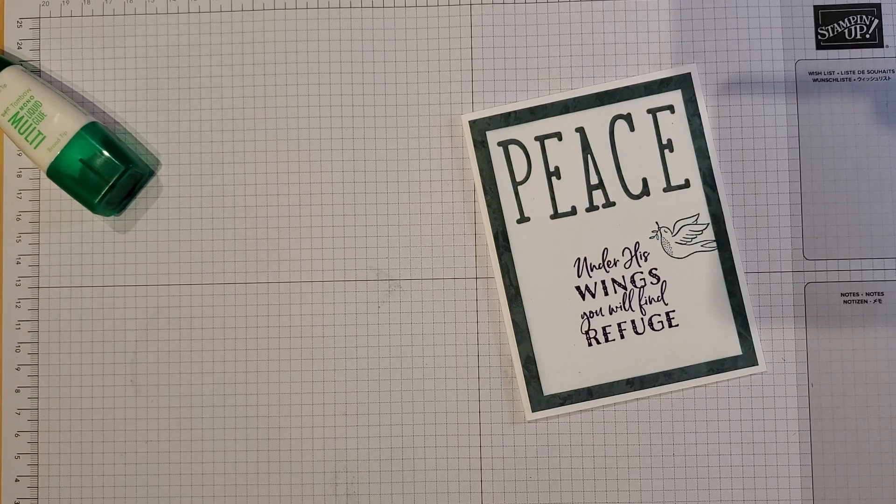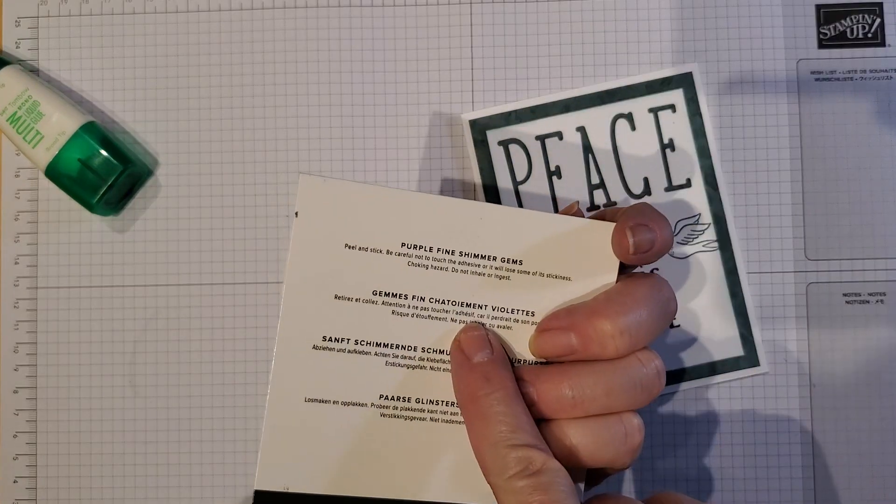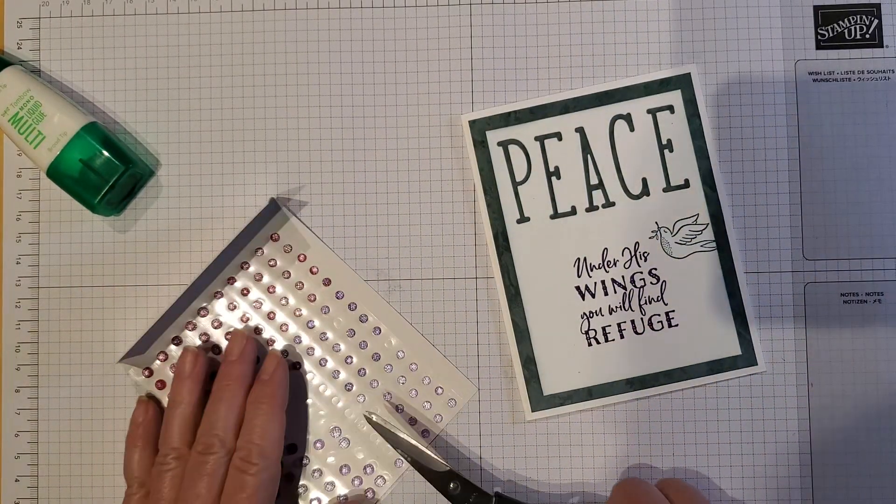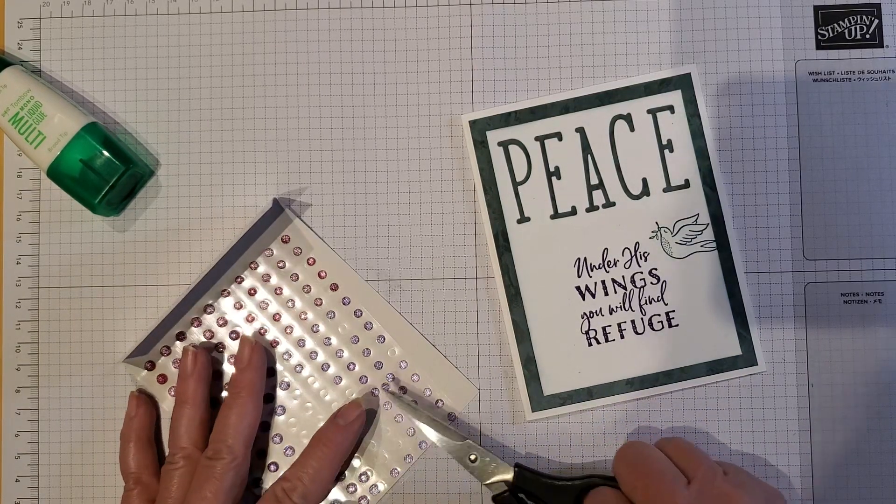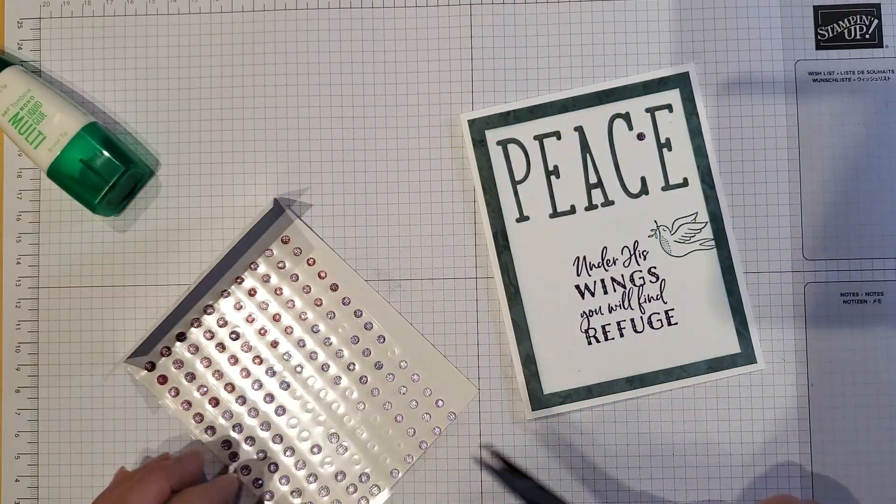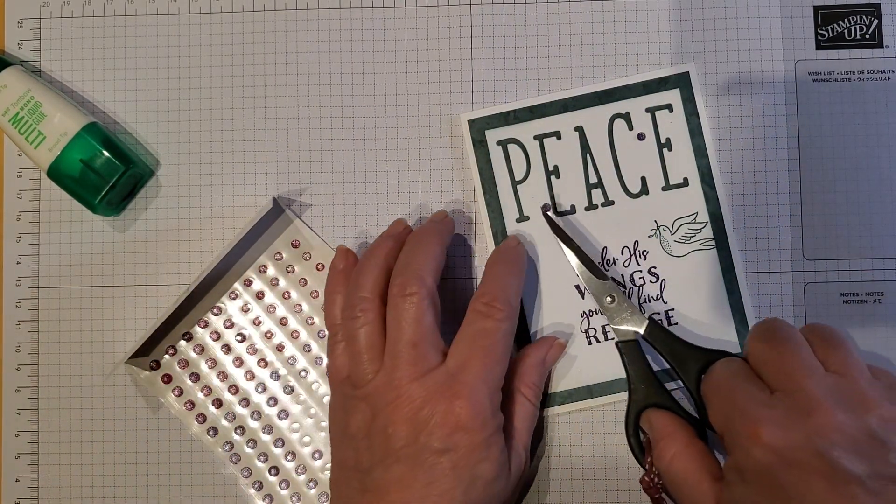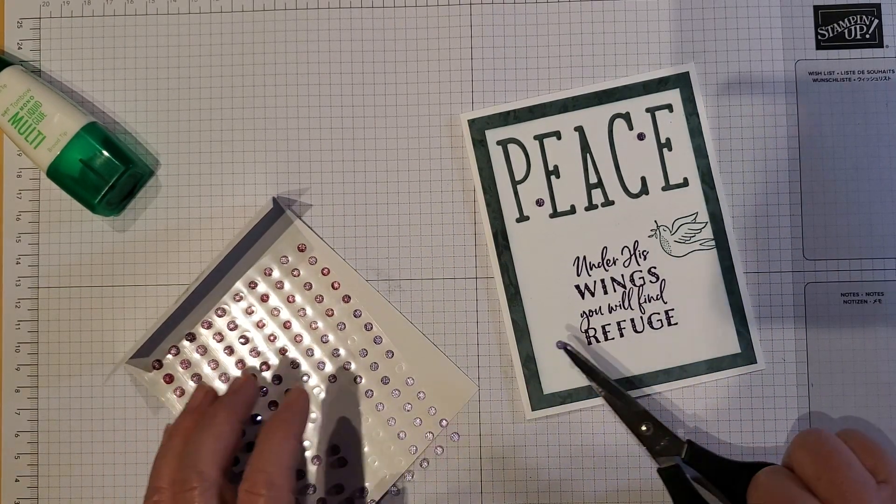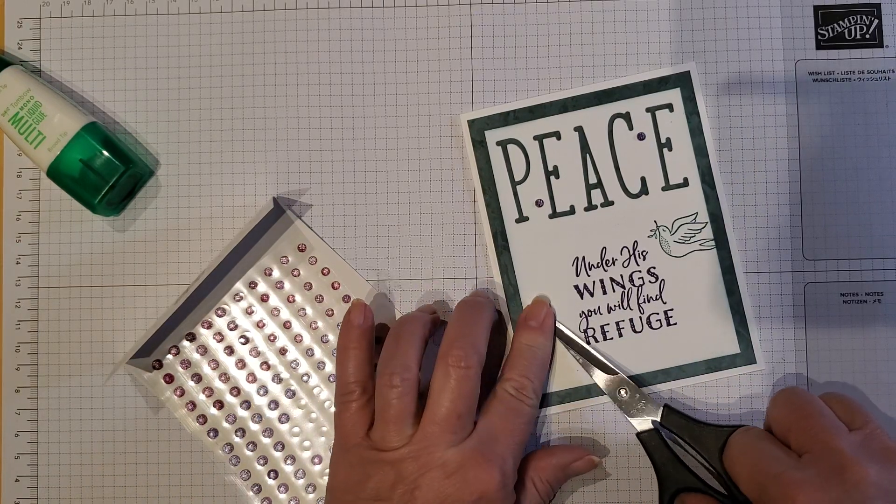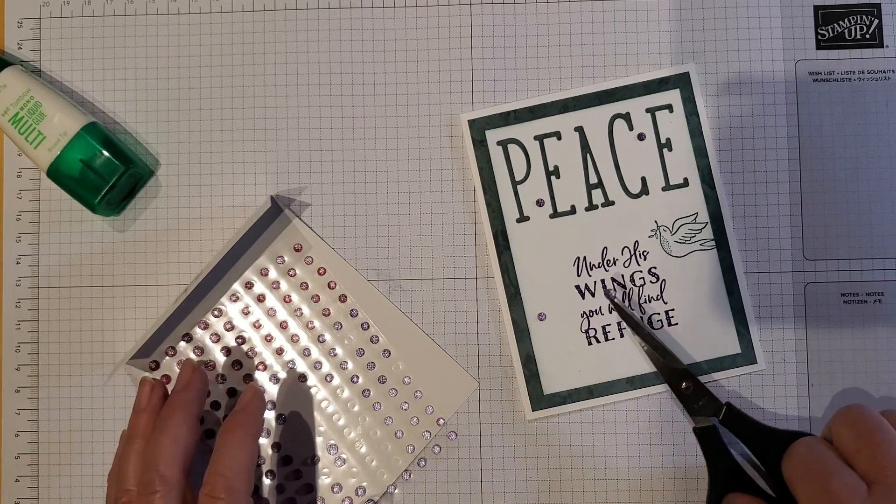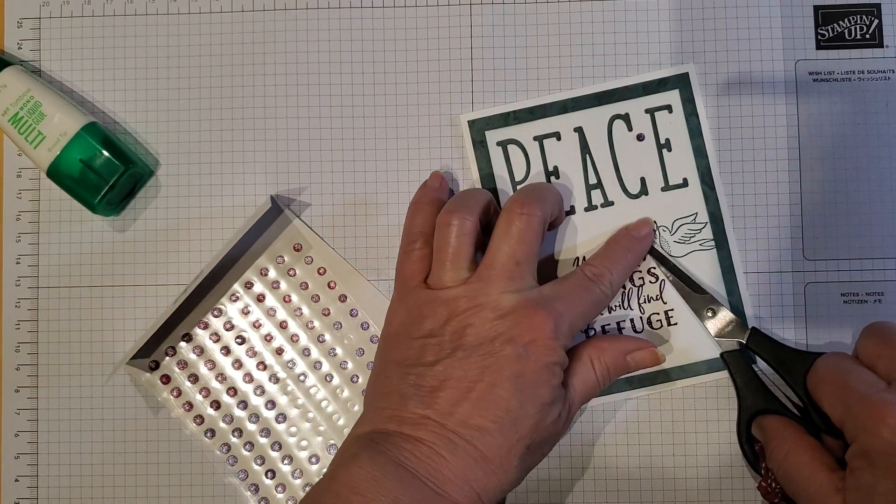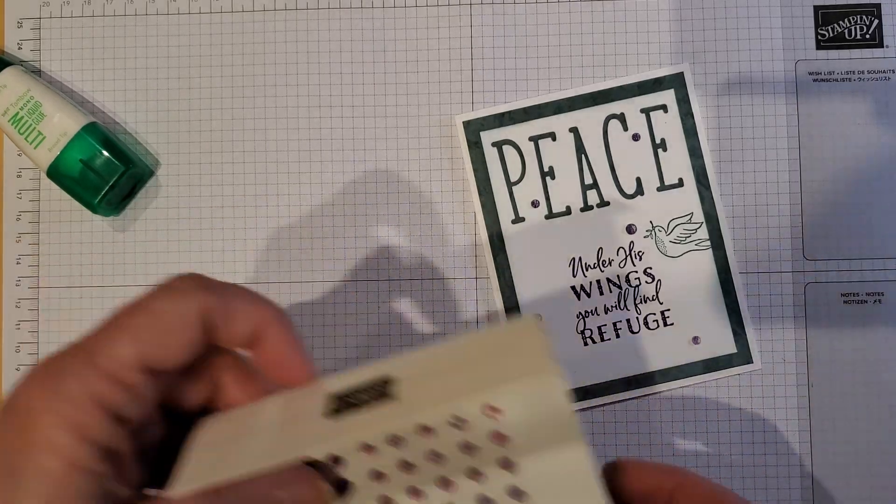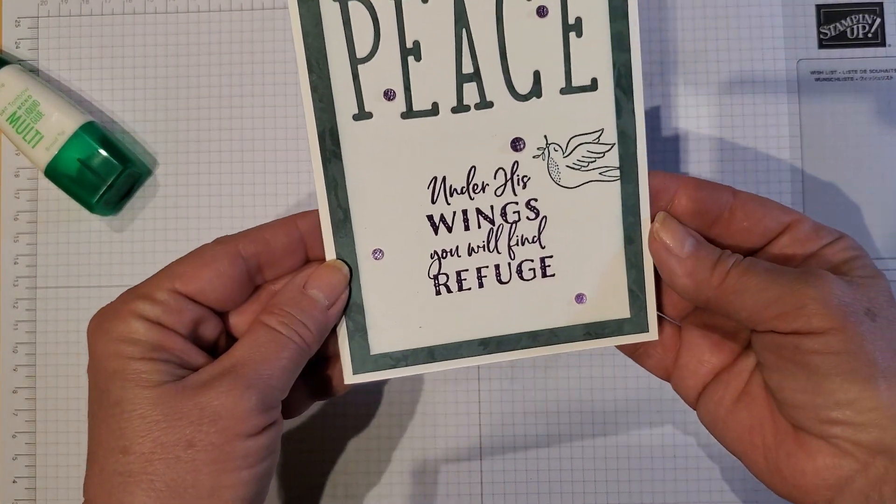And then we're going to add some little bits and embellishments. So, I do have here. These are the purple fine shimmer gems. And these are in the mini catalog. Okay. So, let's grab those. Let me grab my little scissors. Put a little sparkle on here. And we're just randomly putting them here. Let's see. Maybe in here. Let's grab a few more. The more sparkle, the better, right? I don't know. Let's put that over here. We can put one maybe up here. And let's do one last one. I'm putting a whole bunch on here. There we go. Okay. So, there we go. This is our card piece. Under his wings, you will find refuge.